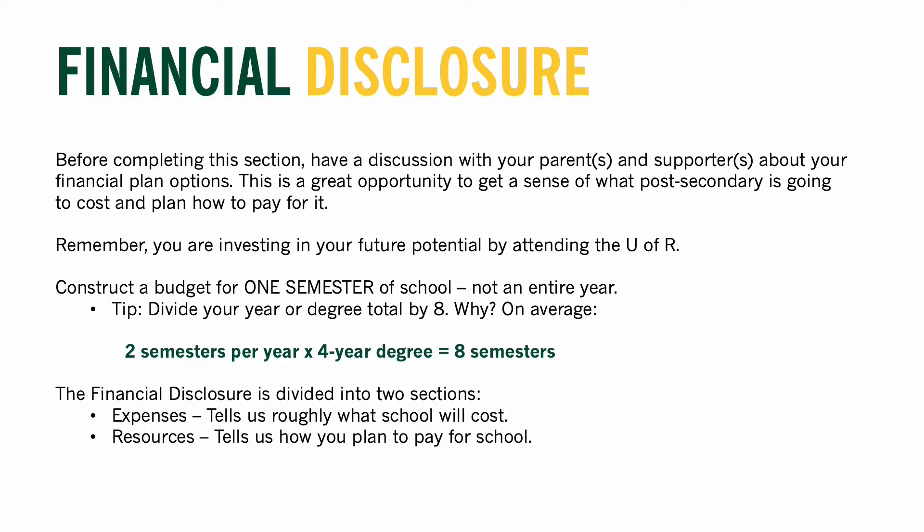The financial disclosure is used to assess your potential income for the upcoming fall term, not your entire first year. When determining amounts to enter, budget for one term. One way to do this is to divide by eight — a typical academic year is two terms and a degree takes about four years, which is eight terms in total. Each student has a unique situation, so estimate to the best of your ability. Do not stress if your dollar amounts are not accurate down to the cent.